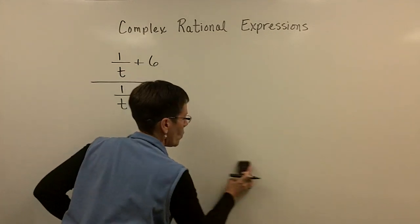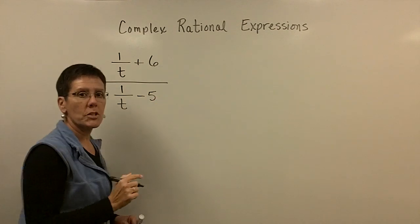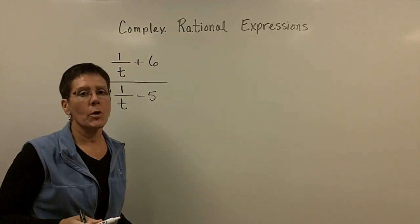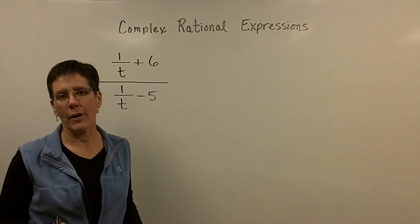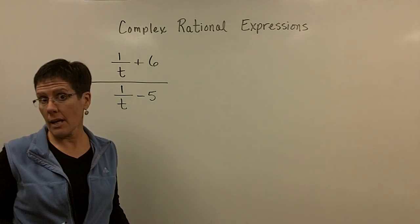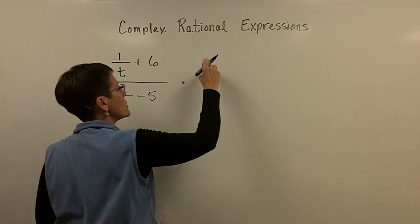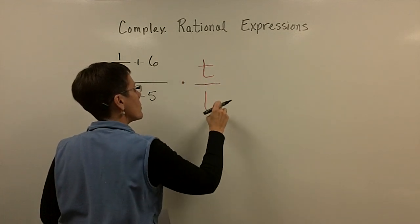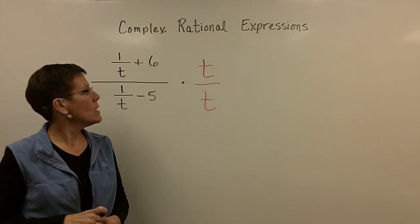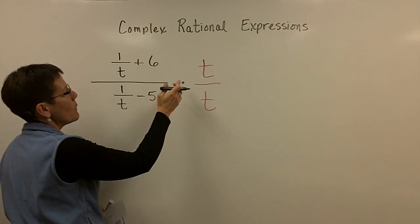What I'm going to do is multiply this complex rational expression by the number one. The number one. And what I'm going to use is the least common denominator for all the fractions in the problem. The reason this is so nice for this problem is that the LCD is just t — just the letter t. So I'm going to multiply this fraction by the number one, written in the form of t over t.